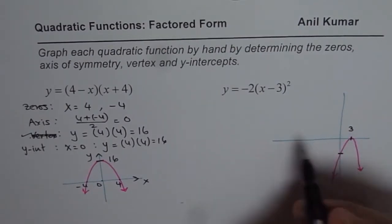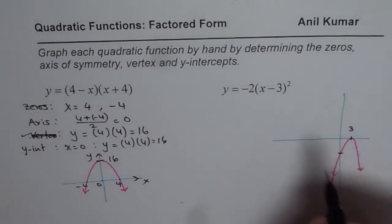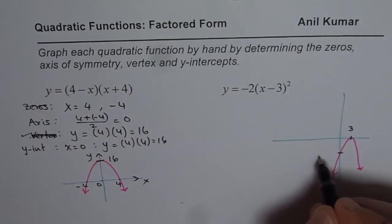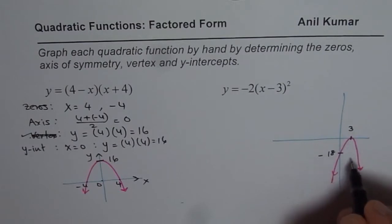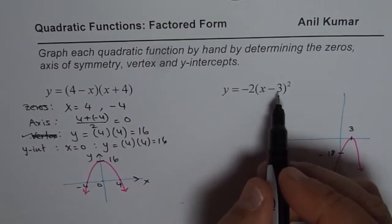That is the parabola where this point is at 3. The y-intercept is at 2 times 9 with a negative sign, so minus 18. That is how it is going to be. So let us calculate the values now.